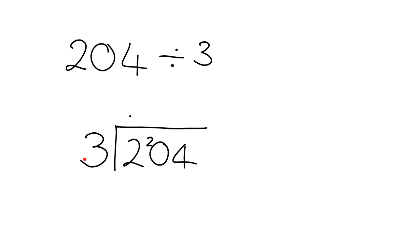We say, how many 3's are there in 20? Well, we know that 3 times 6 gives me 18, and 3 times 7 is 21, which is too big, so it'll be 6 times.